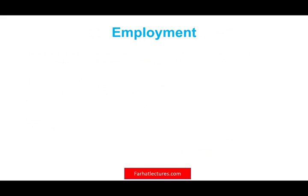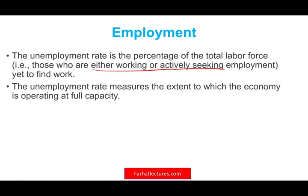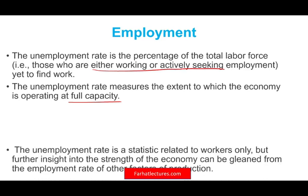Employment — we want to know what proportion of the population is producing, which has a lot of consequences. It's the rate of the total labor force who is either working or actively seeking employment yet to find work. The employment rate measures the extent to which the economy is operating at full capacity. If we have a low unemployment rate, say 4%, we are operating at full capacity — people have money, you can sell products. But you may also have to pay a premium for labor because workers are scarce.